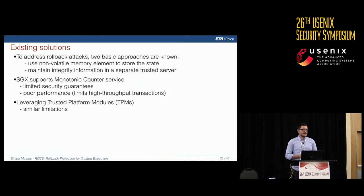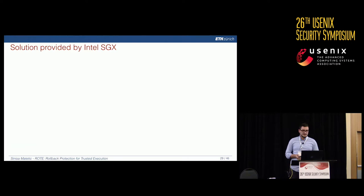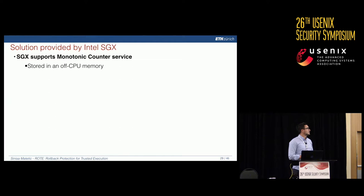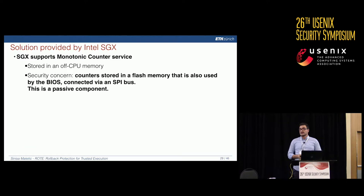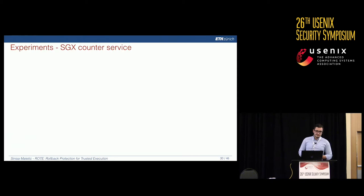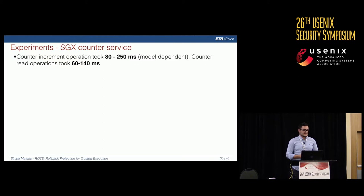Another widely known solution is leveraging Trusted Platform Modules, but the limitations are similar and TPMs are small. SGX monotonic counters are stored in off-CPU memory — not in the processor itself — probably in the flash memory of the BIOS. This memory connects through the Platform Control Hub and SPI bus, which is slow and passive, with no encryption on counters traversing this bus.